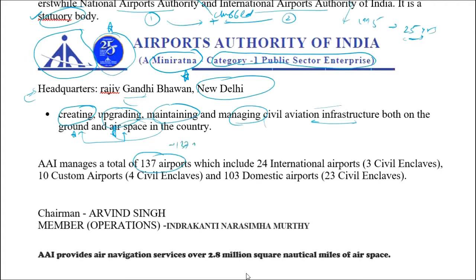Airports Authority of India manages approximately 137 airports in total - note this is approximate as the number has seen some recent changes. This includes 24 international airports, 10 custom airports, and 103 domestic airports.